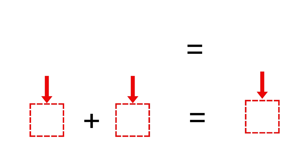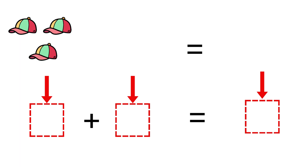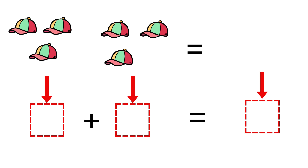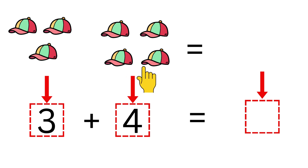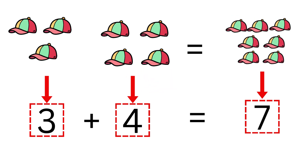Now, take a look. Let's add some elements. Here goes the first cab, second cab, third cab on the same side. On the other side, I will add first cab, second cab, third cab, fourth cab. So, on one side we have three caps, and on the other side we have four caps. How many caps are there in total? Let's count: one, two, three, four, five, six, seven. In total, we have seven caps. Which means three plus four is equal to seven.